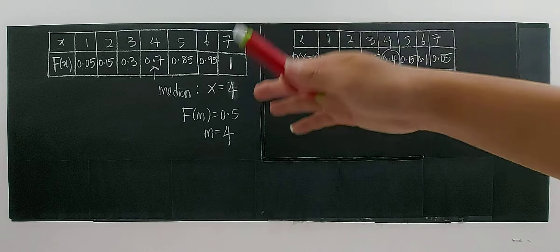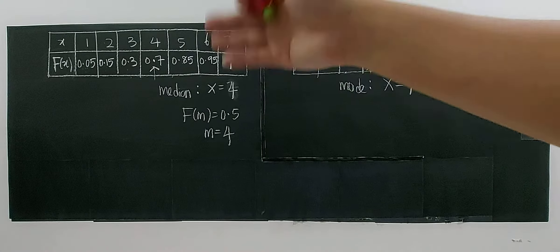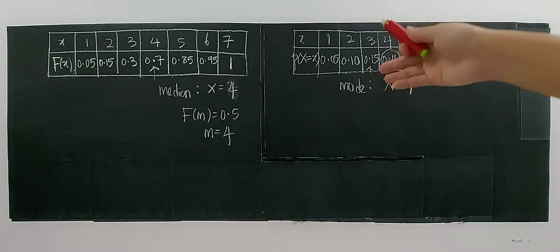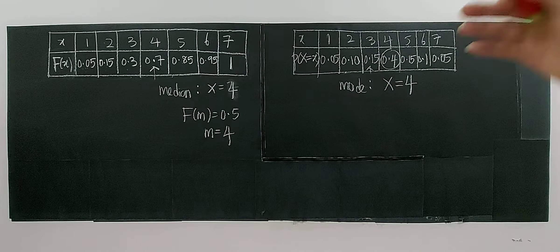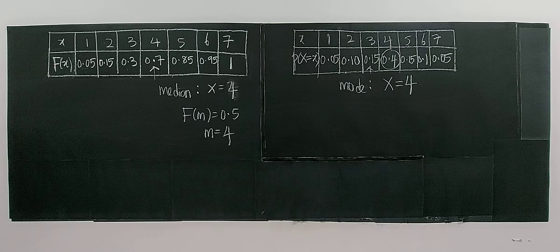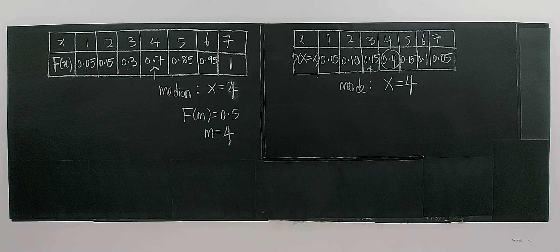This is how we use the cumulative distribution table and the probability distribution table to identify these two measures of central tendency. We will learn how to find the mean in the next lesson. That's all for this video.